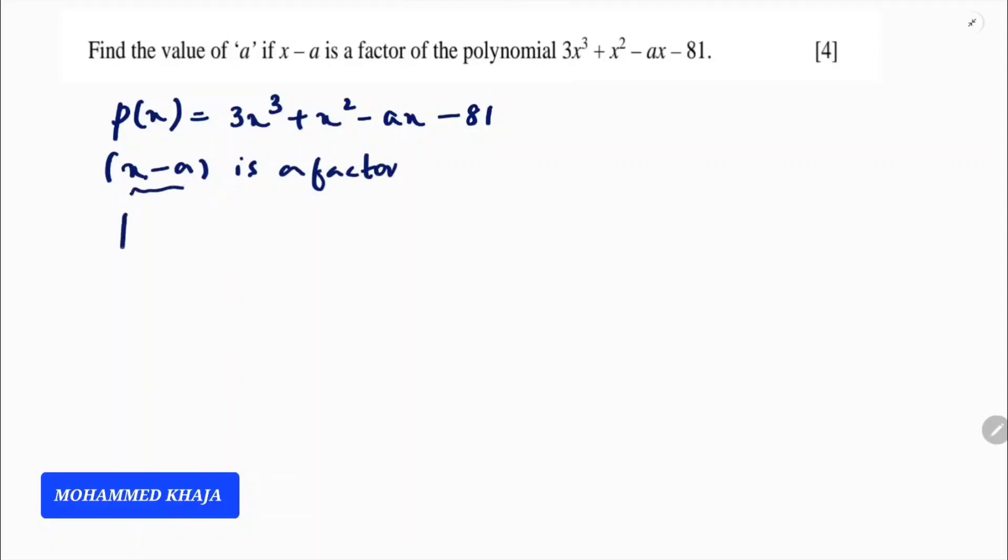If x minus a is a factor, then p of a should be 0. Now I will calculate p of a and I will equate it with 0.